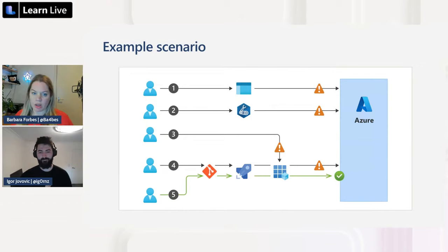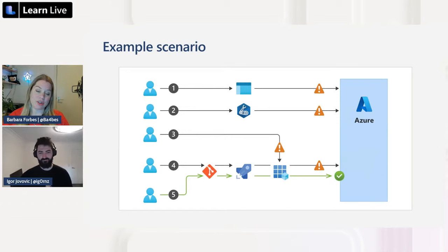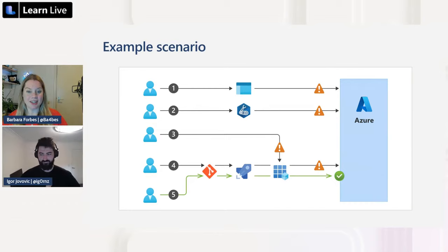The second scenario is slightly better: someone pushes a Bicep file from their local machine. But there's no auditing, no testing, and no code review. Scenario three involves a service principal, but someone has copied its credentials and is running deployments locally — those credentials are now somewhere untracked, which is a security risk.